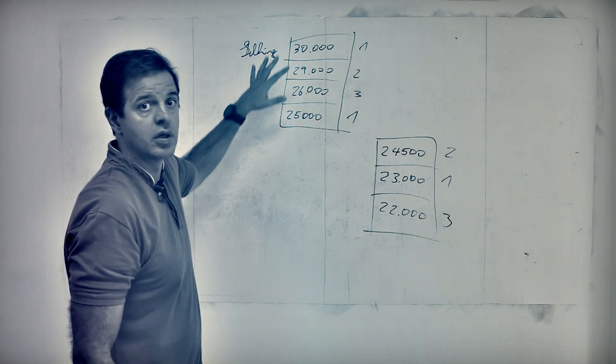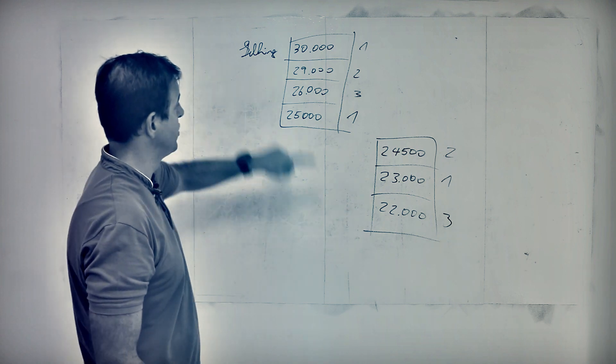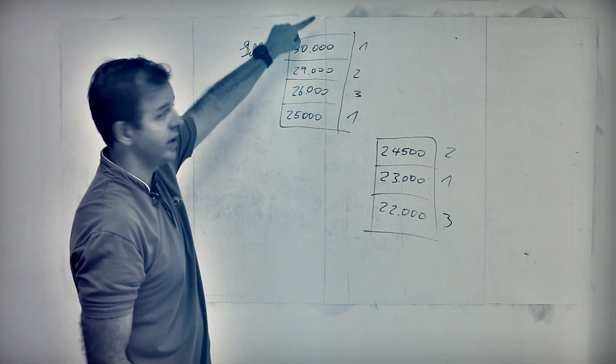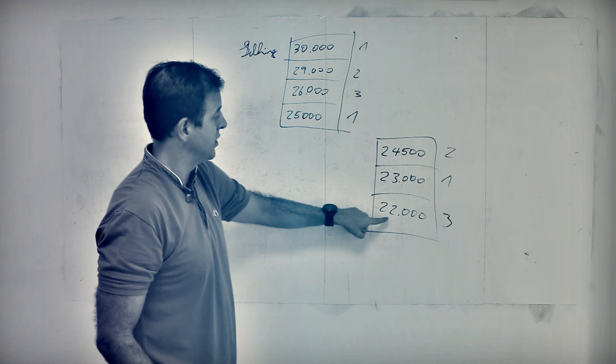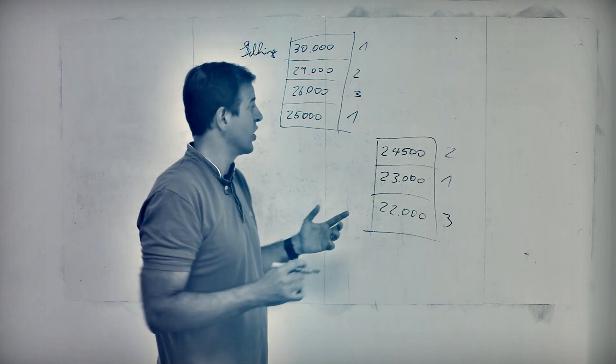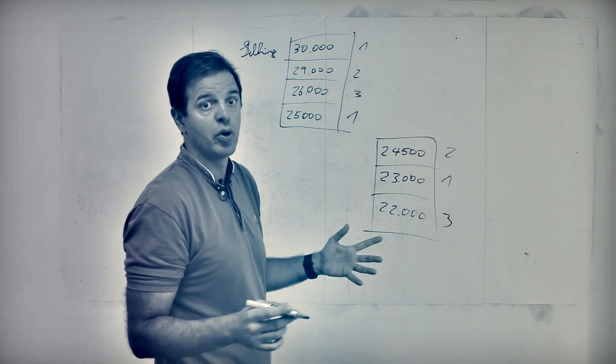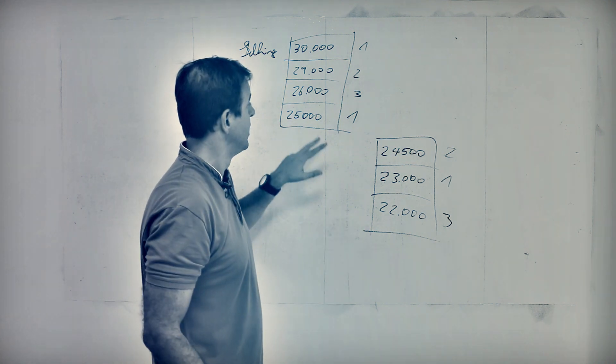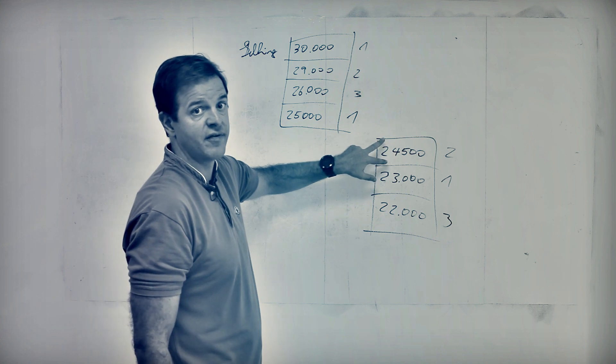So this is our book. These are the buyers. So you notice the prices are going all the way up. So let's look at the market depth and the top of book. What is the top of book right now? Well, the bid ask spread is £25,000, £24,500.